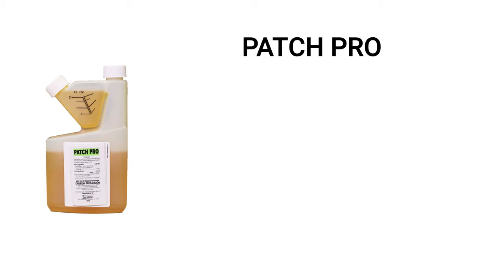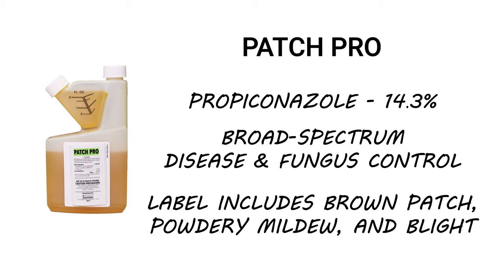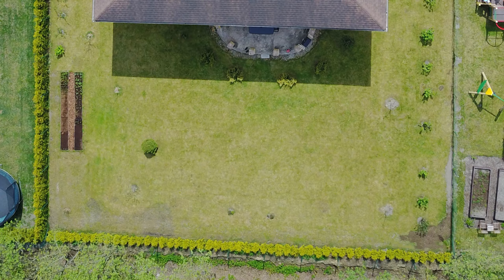Patch Pro is a systemic fungicide that contains the active ingredient propiconazole and is designed to get rid of a broad spectrum of harmful and unsightly diseases on plants and lawns. Patch Pro controls many fungi and diseases such as brown patch, powdery mildew, and blight. If you're actively dealing with a lawn fungus or disease, apply the pesticide directly to affected areas. With Patch Pro, you can also use it preventively and broadcast it over your entire lawn.